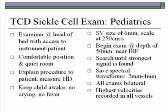Explain the procedure to the patient, measure and record the head diameter, and keep the child awake. The sample volume size routinely used in the STOP trial was 6 millimeters, and the scale was initially set to display peak velocities of 250 cm/s to display the entire waveform and get a good mean velocity calculation. Begin the exam at a depth of about 50 mm, where you anticipate the bifurcation. Search until the strongest signal is found, then step the sample volume out and track through the entire course of the vessel. Save waveforms at 2 to 4 millimeter increments. All exams are bilateral and the highest velocities are recorded in all vessels.